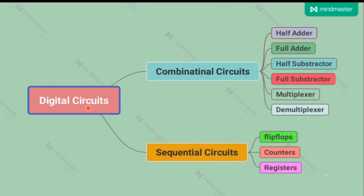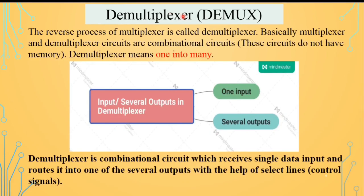Digital circuits are divided into two parts: combinational circuits and sequential circuits. Combinational circuits do not have memory, while sequential circuits do have memory. In the last part we discussed multiplexer, and in this part we are going to discuss demultiplexer. Both multiplexer and demultiplexer are combinational circuits, which do not have memory.